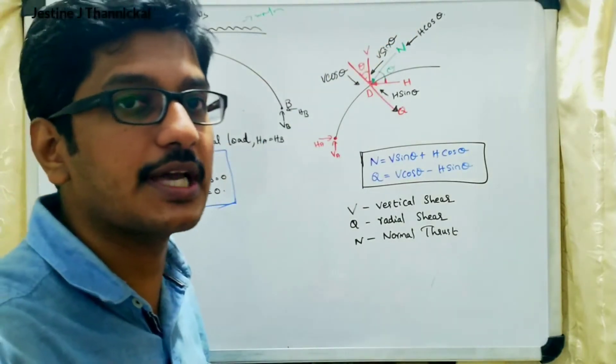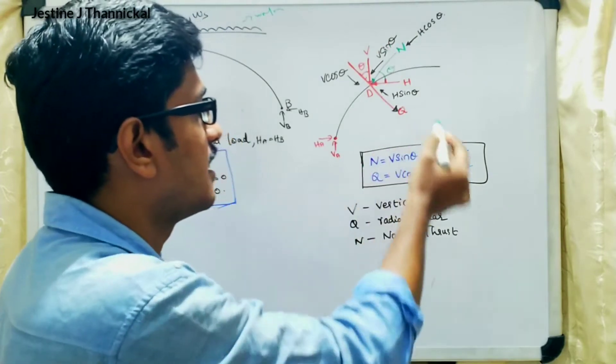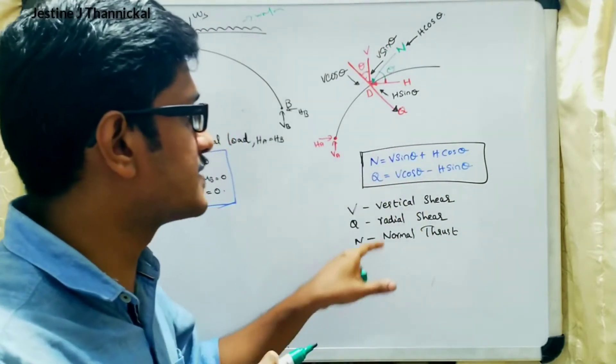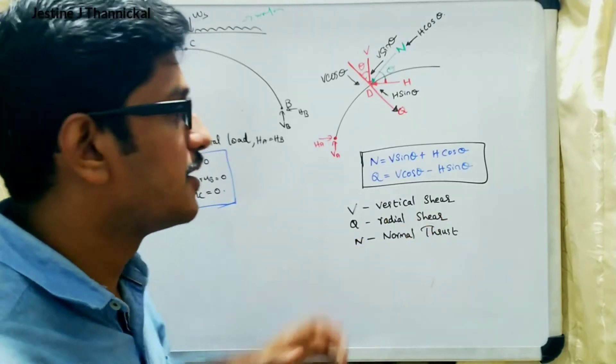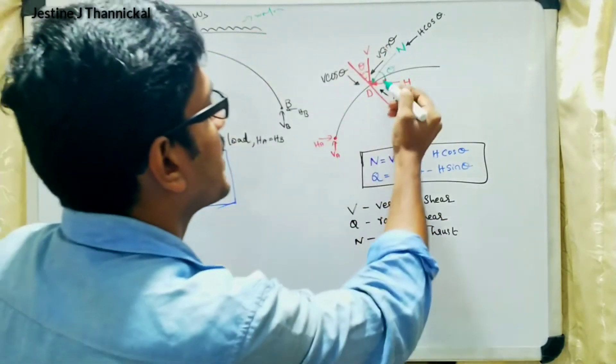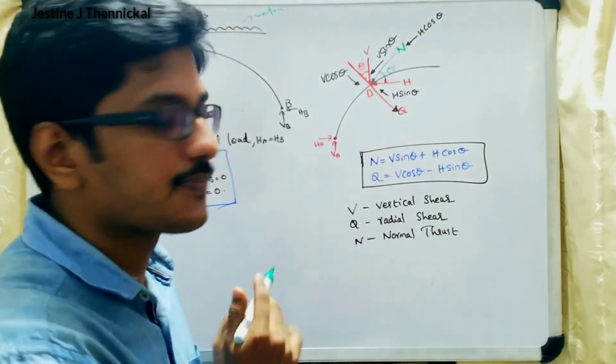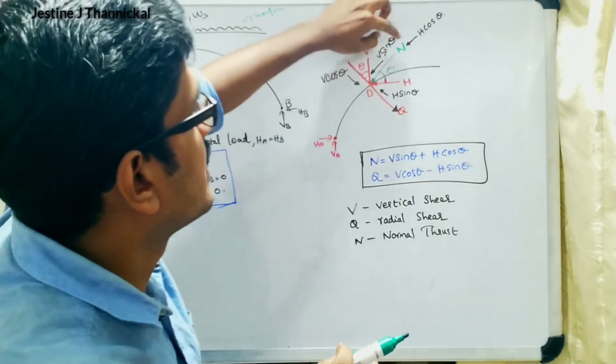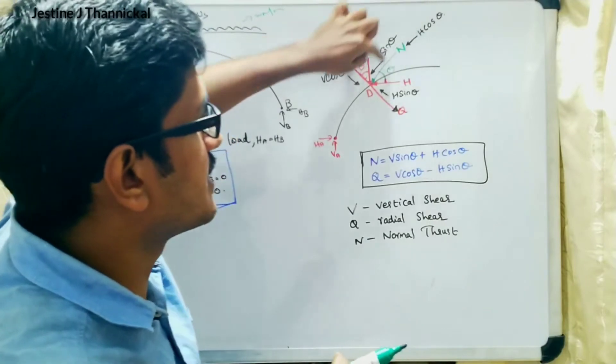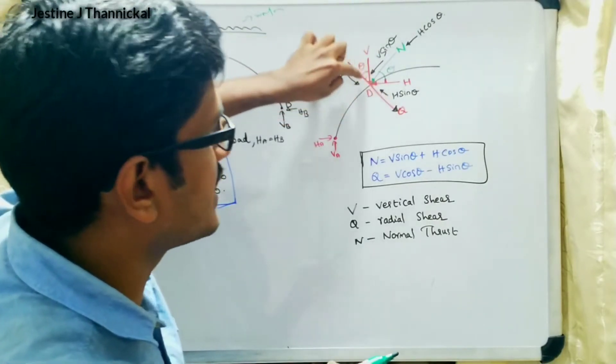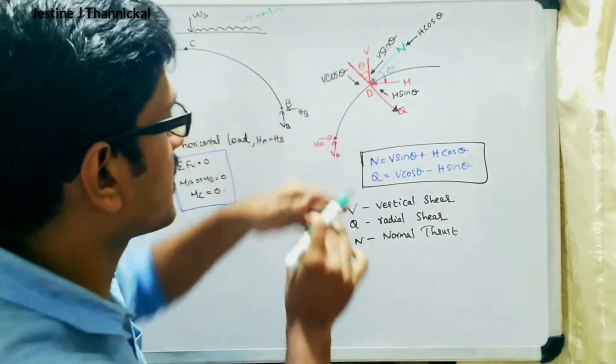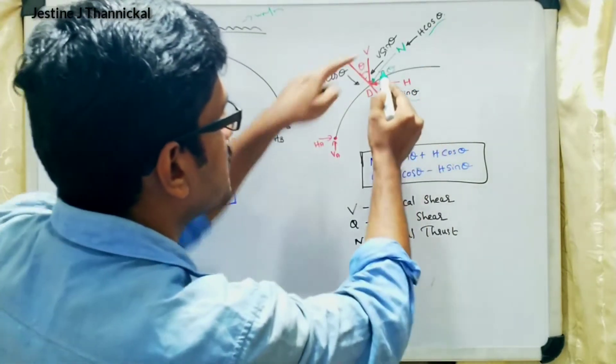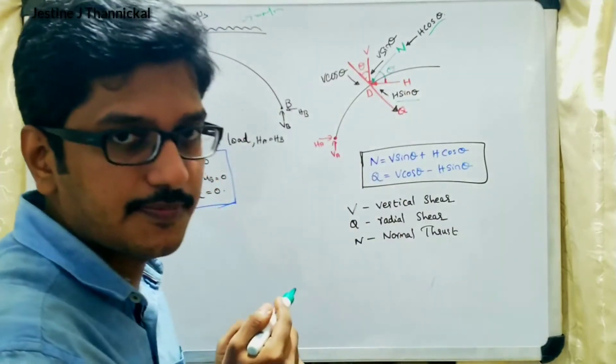These are the different forces going to happen over a particular point. And we have to formulate the equations related to N and Q. N means normal thrust, Q means radial shear. So here it is making an angle theta. We can split this component as H cos theta in this direction and H sin theta in this direction.